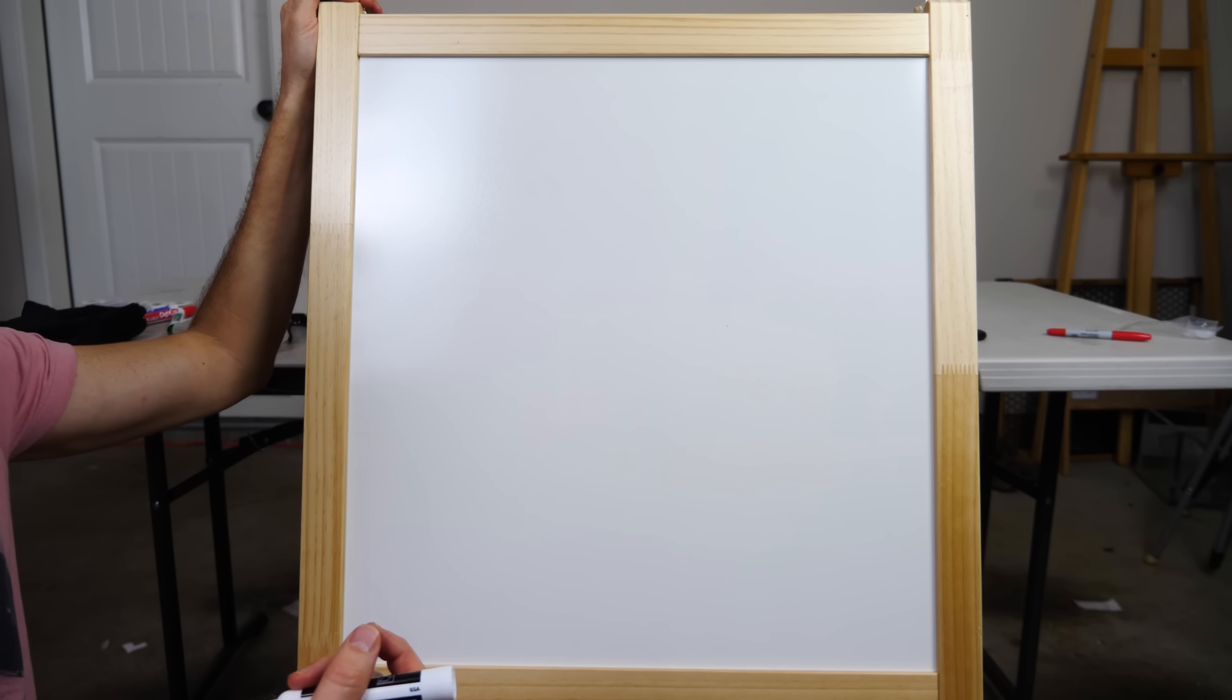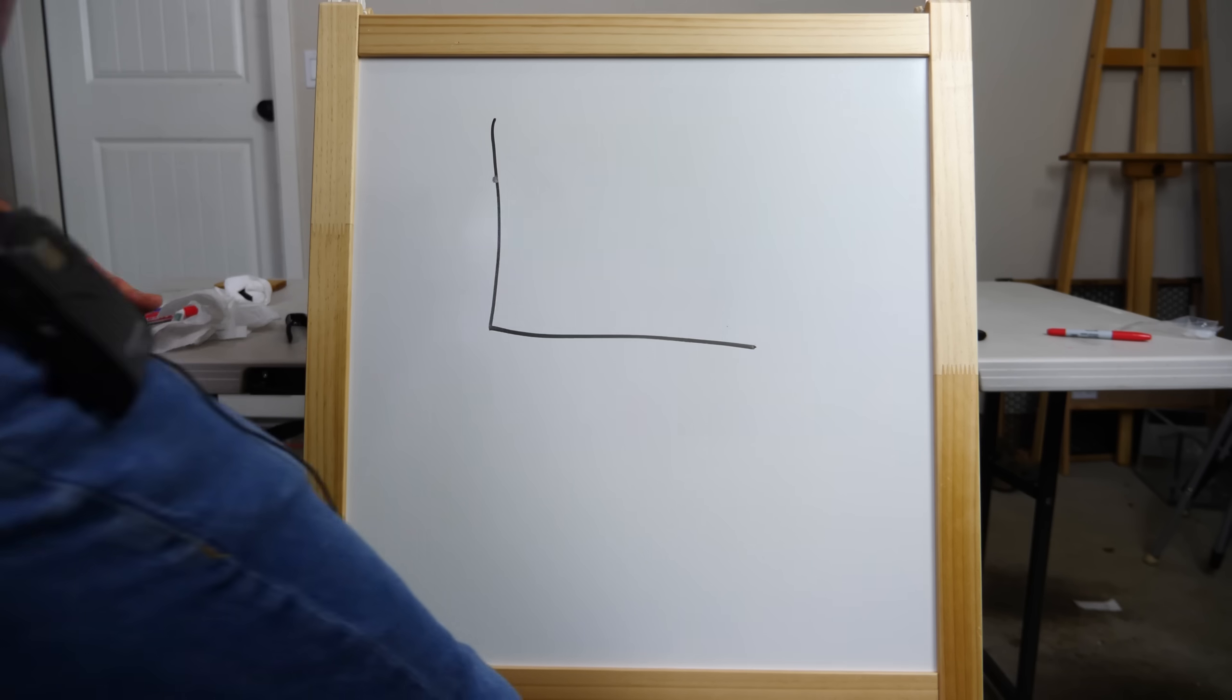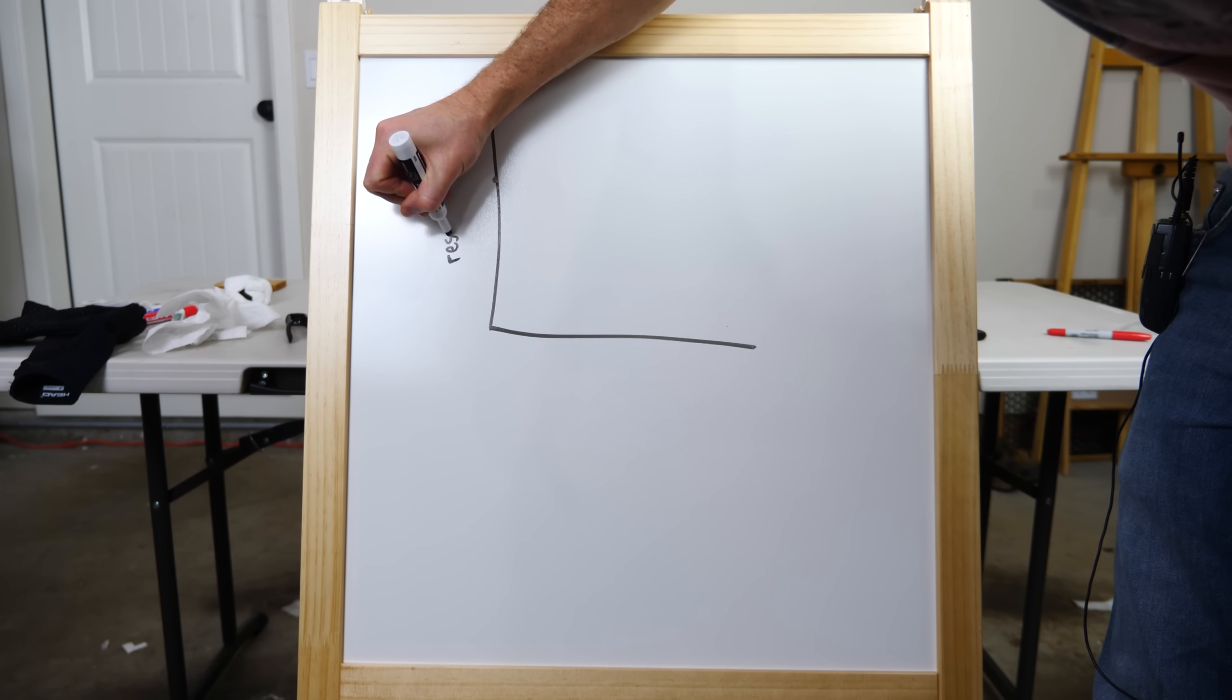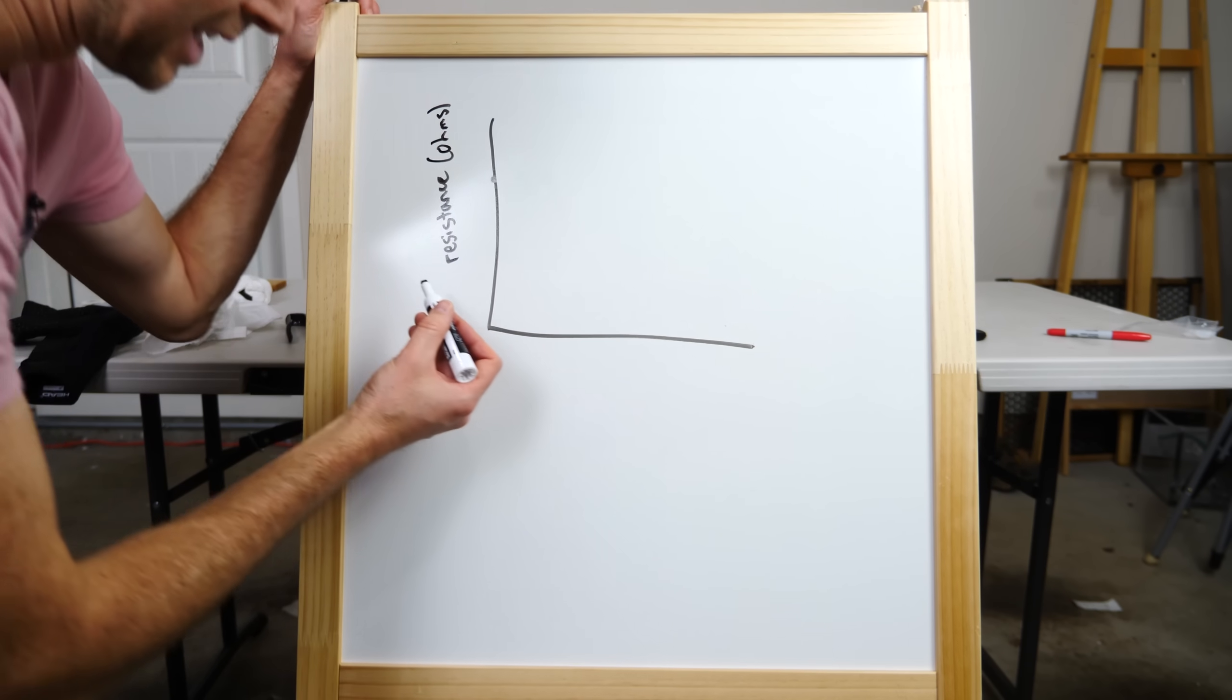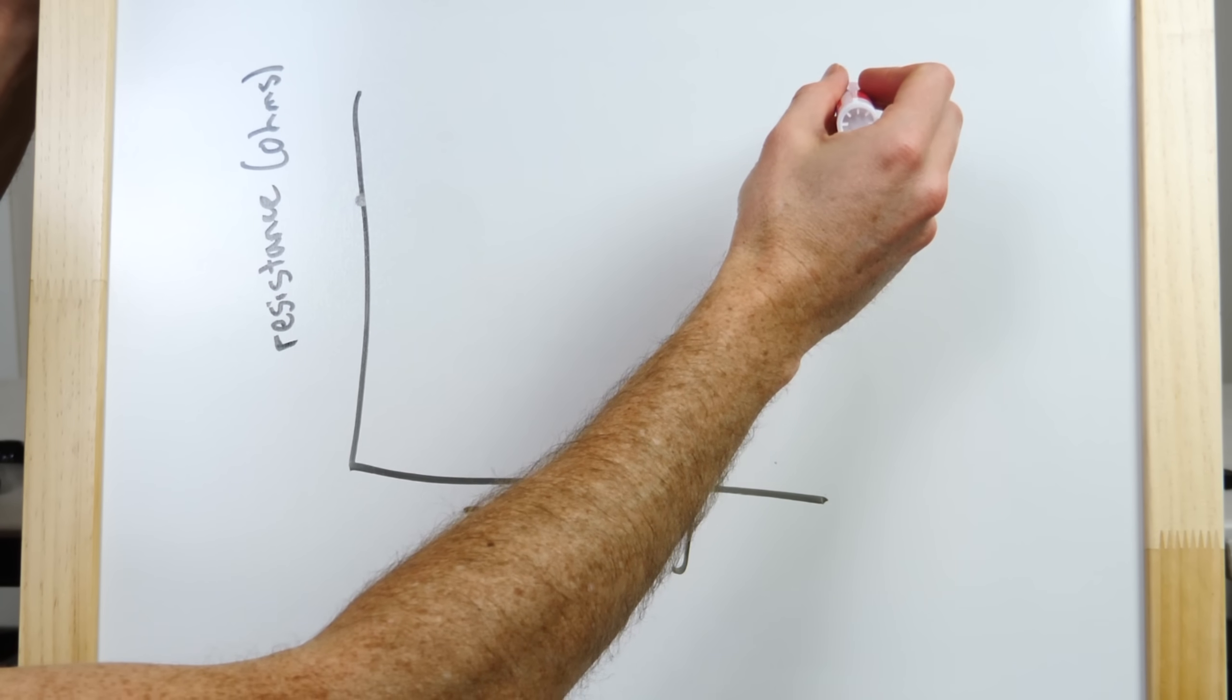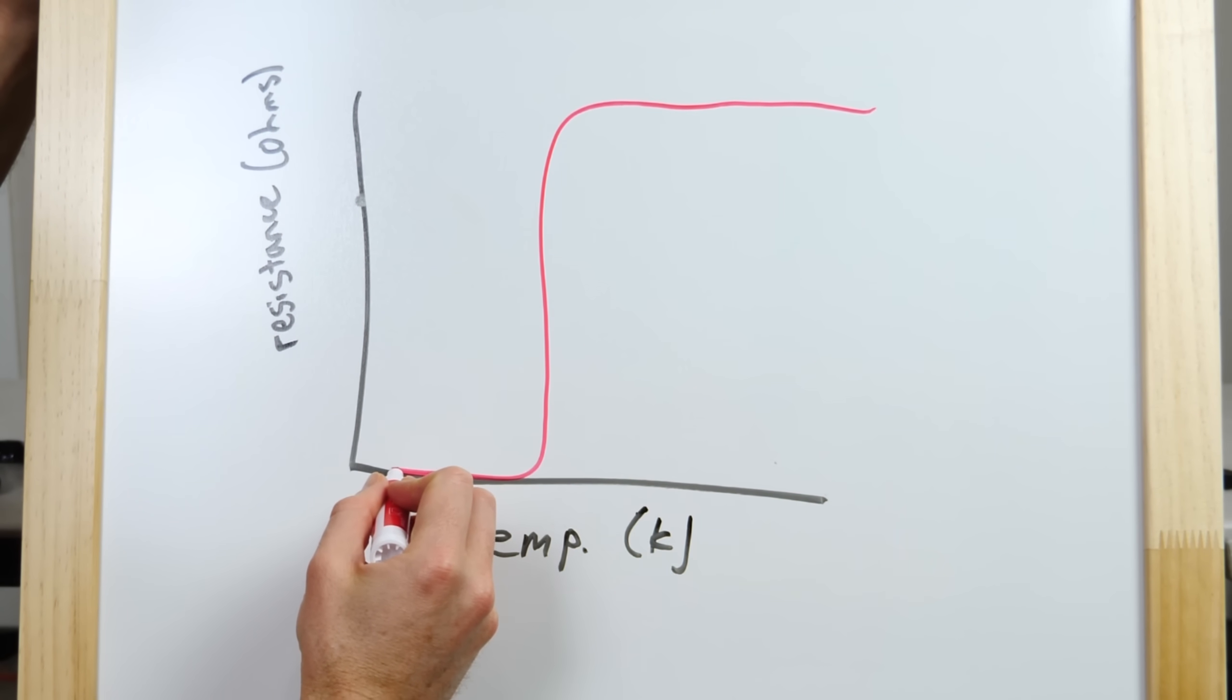So, in order to understand how quantum locking works, let's first understand how superconductivity works. If I were to graph here on the y-axis resistance, this is just electrical resistance versus temperature. At high temperatures, the resistance would be high, but then suddenly it would drop down to zero.